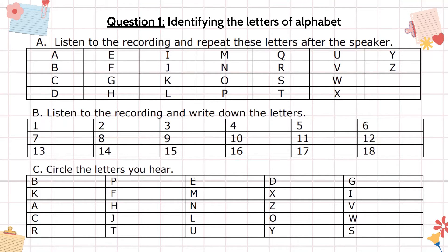The English alphabet has 26 letters. Now listen to these letters and repeat after me: A.